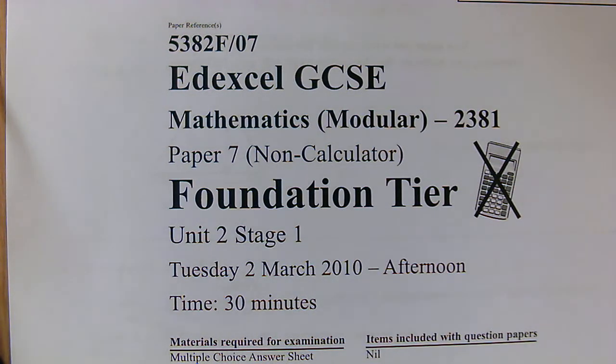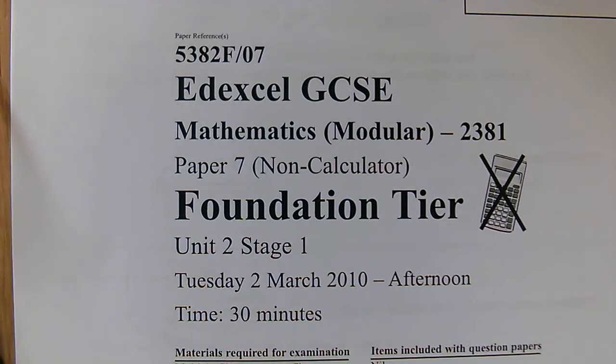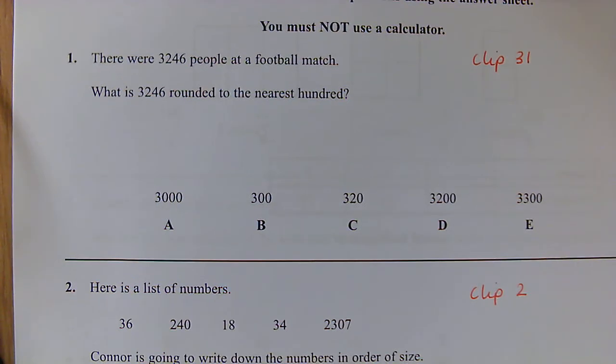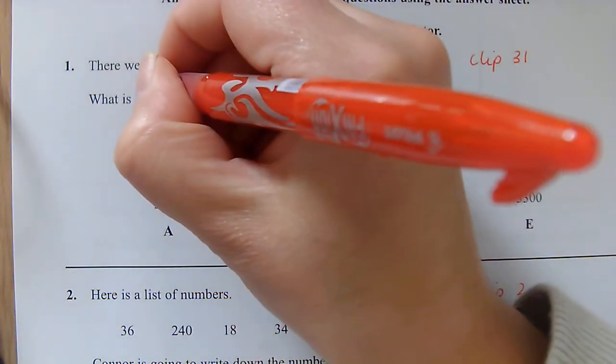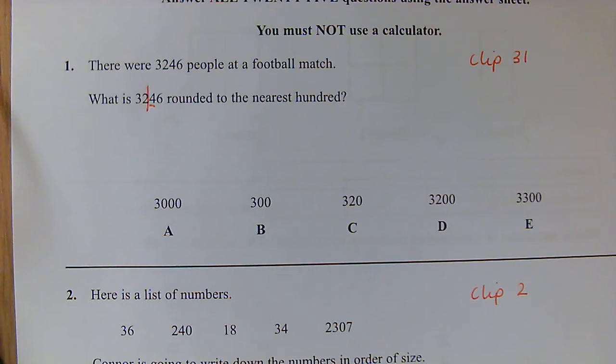Work solutions to the Foundation paper multiple choice March 2010. First question: we've got 3,246 people at a football match. We need to round this to the nearest hundred, so my rounded line would go after the two. Looking at the next number along, is it five or more? No, it isn't, so it's 3,200.